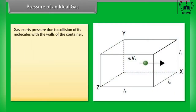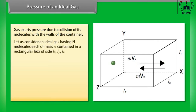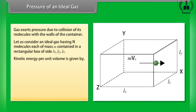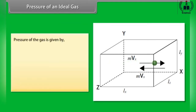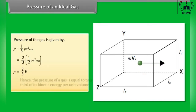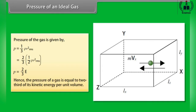Pressure of an ideal gas. Gas exerts pressure due to collision of its molecules with the walls of the container. Consider an ideal gas having N molecules each of mass m contained in a rectangular box of dimensions Lx, Ly, Lz. Kinetic energy per unit volume is given by E = ½ρV_rms². The pressure of the gas is given by P = (2/3)E. Hence, the pressure of a gas is equal to two-thirds of its kinetic energy per unit volume.